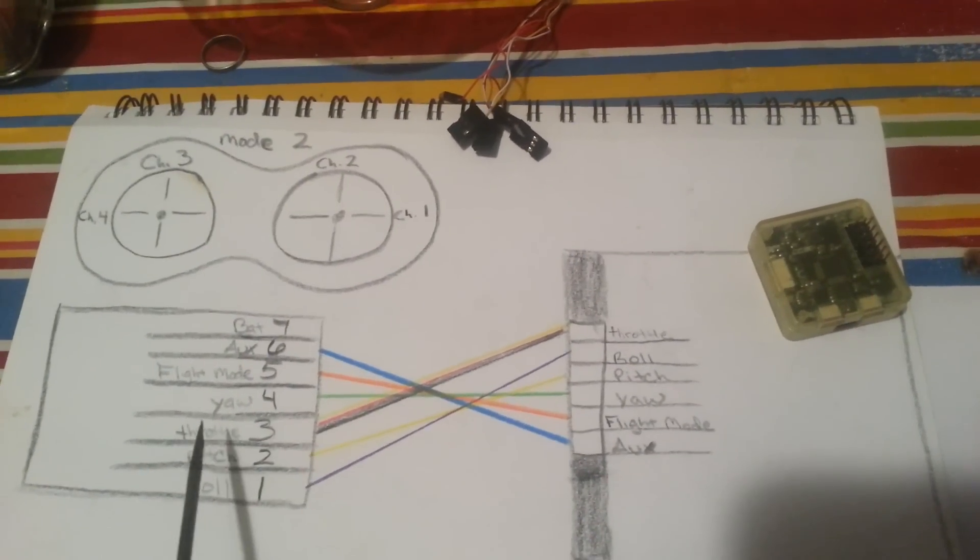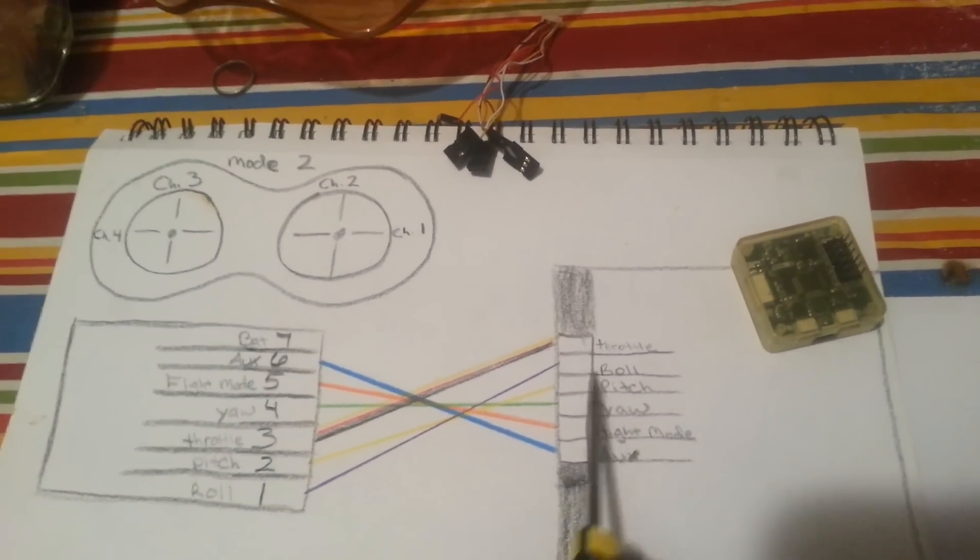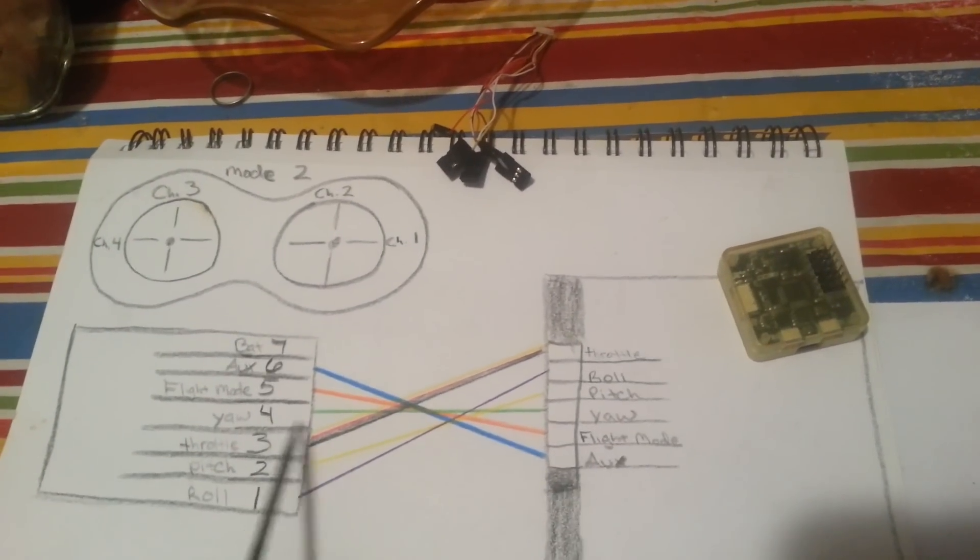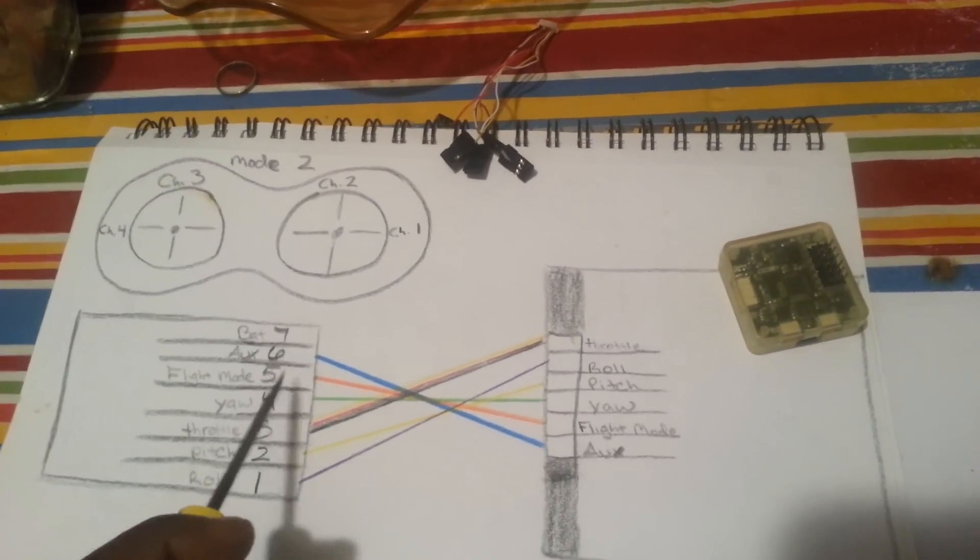Throttle on the top, which over here, channel 3, connect that pin there. Roll to channel 1, pitch to channel 2, yaw channel 4, flight mode channel 5, and auxiliary channel 6.